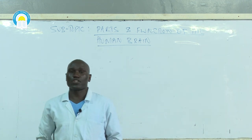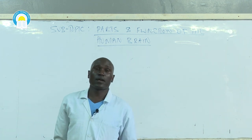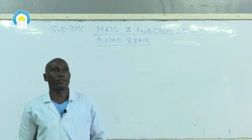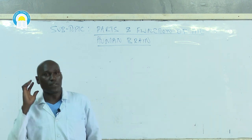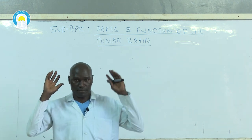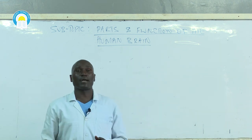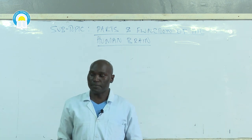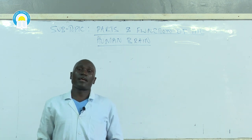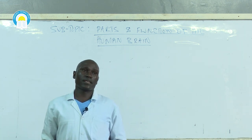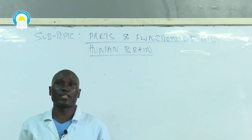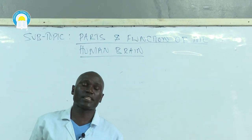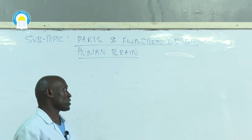As mentioned before, the human brain is a very complex organ located on the anterior, that's the upper part of the human body. The brain is covered with three different types of membranes which are known as meninges.